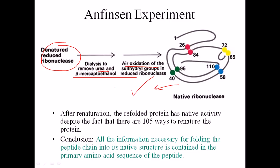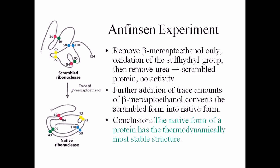From this, we can conclude that all the information necessary for protein folding is not incorporated in the secondary, tertiary, or quaternary structure. All the information necessary for protein folding is incorporated in its primary sequence. The primary sequence has it all — it only depends on the interactions when the amino acids start to interact with each other to produce a properly folded protein.